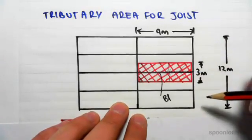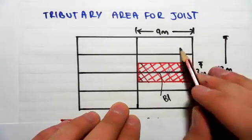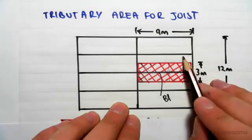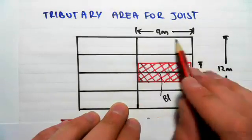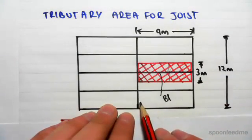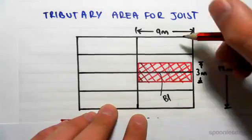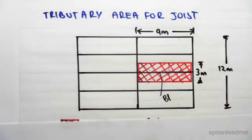Same thing for this joist here, it's going to be 1.5, 1.5. Same thing for this one here, 1.5, 1.5. So each one of those is 3 meters. And this edge girder, which we're not worried about now because this is a completely different beam, that's going to carry 1.5 meters of this and 1.5 meters of that slab. So that's just dividing it up.